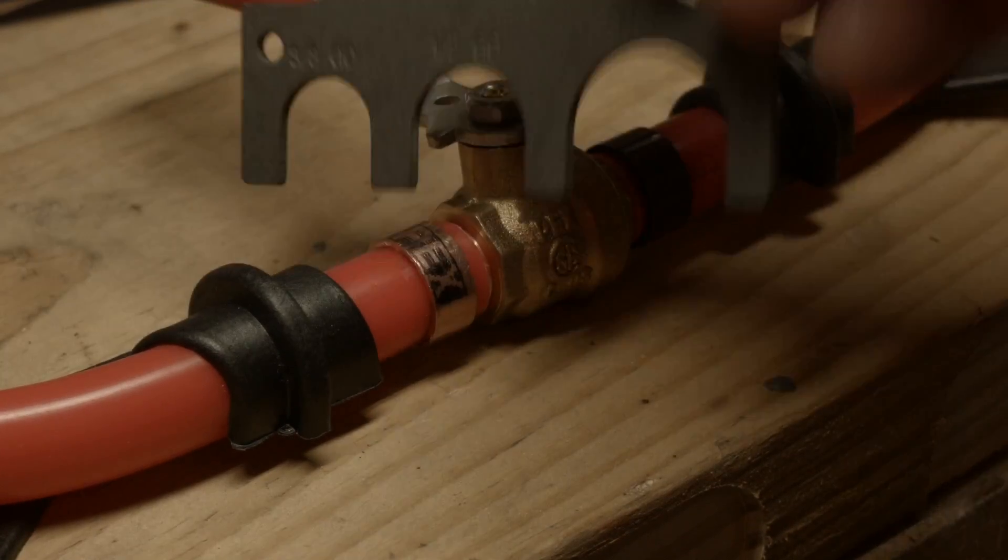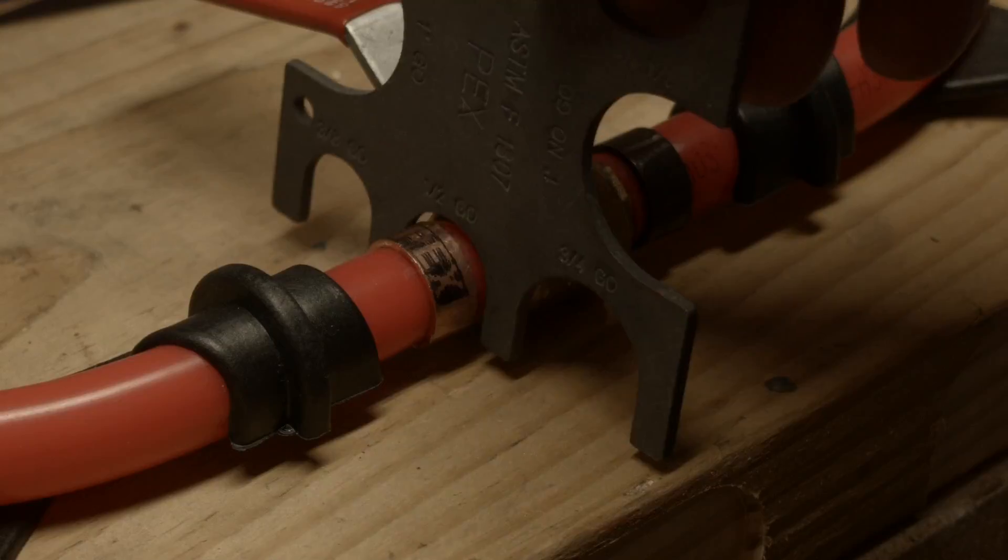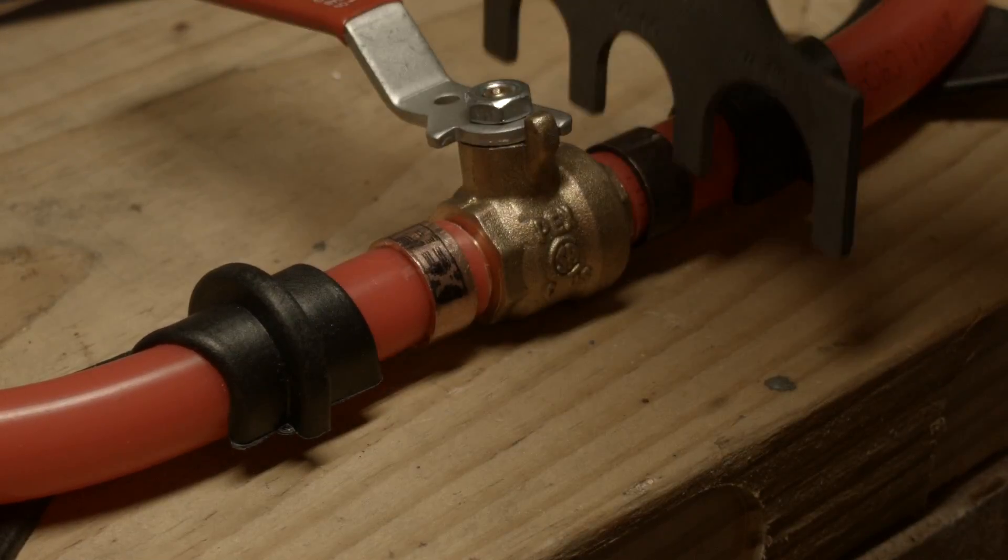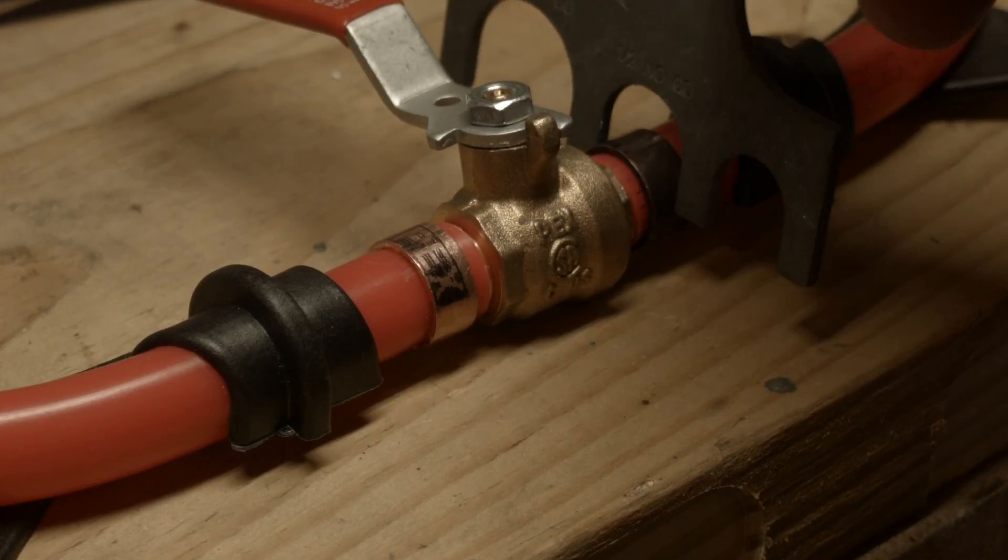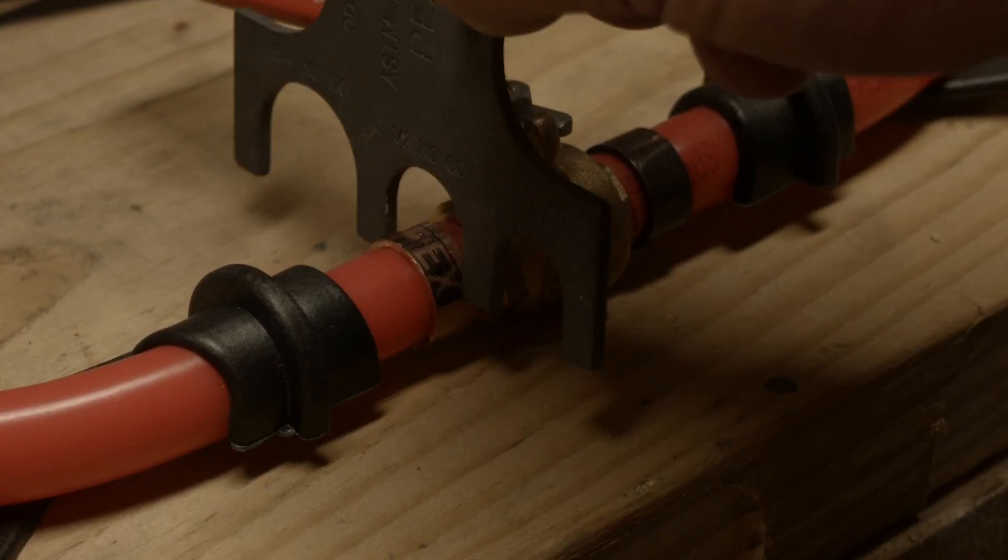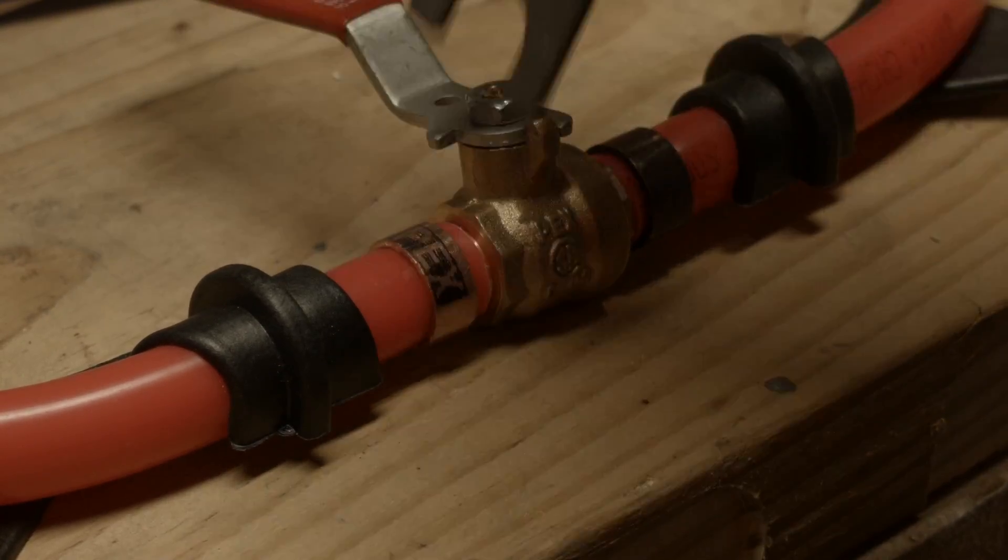Now the half-inch go has to fit over it. Easy, like this. And the no-go has to get stuck. So the no-go does not fit. If the no-go fits, then something went wrong.